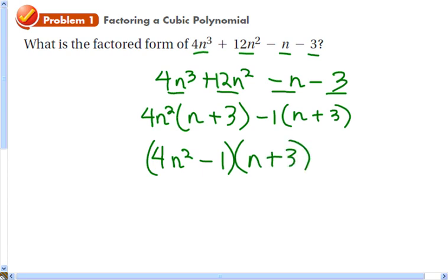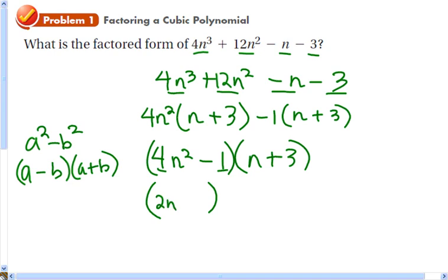Look at both your binomials and make sure neither can be factored. 4n² is a perfect square and so is -1. So that fits a² - b², which factors into a - b times a + b. My a is 2n. We're going to do 2n - 1, and then 2n + 1, and we still have a factor of n + 3.